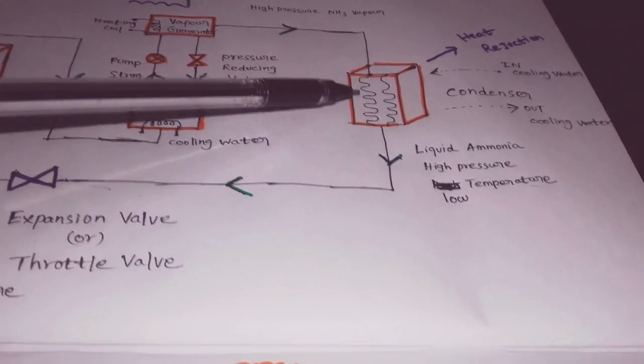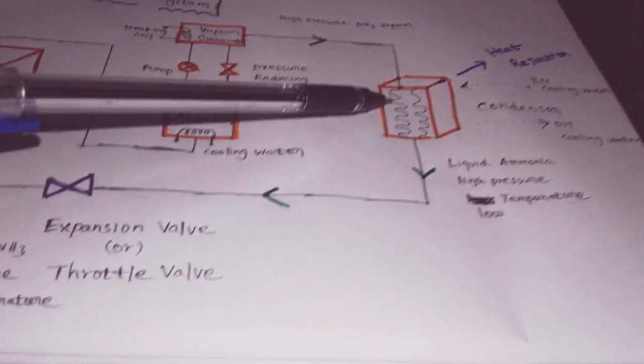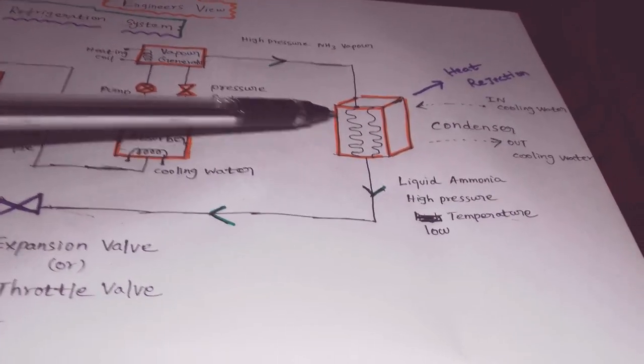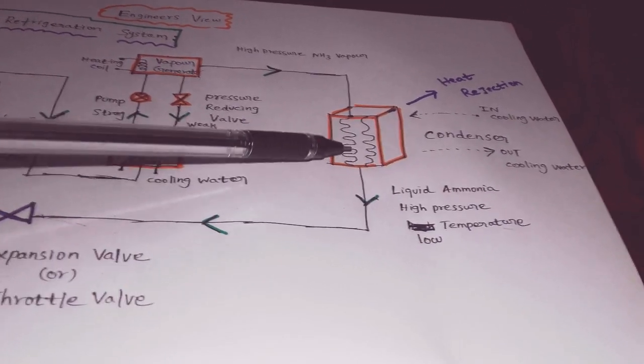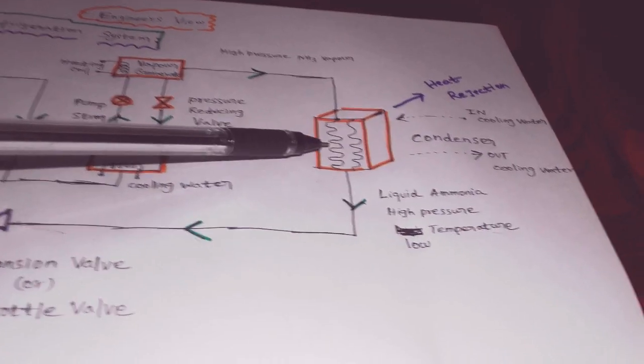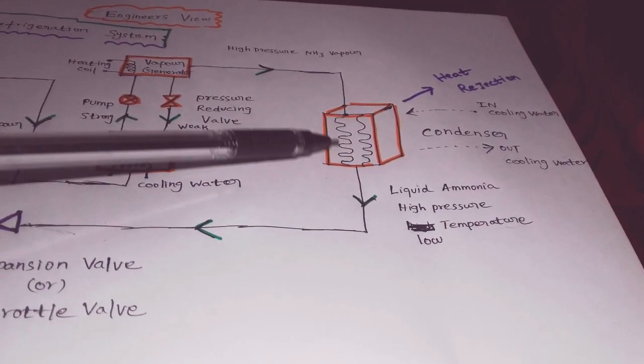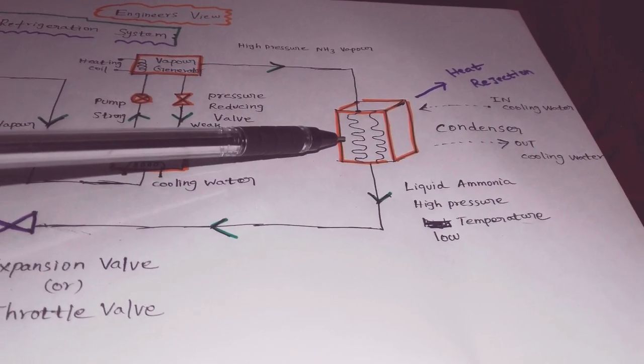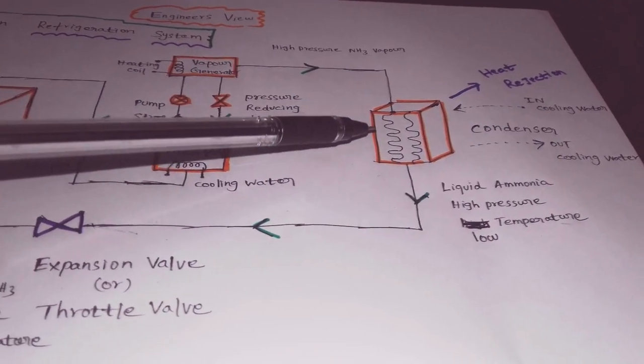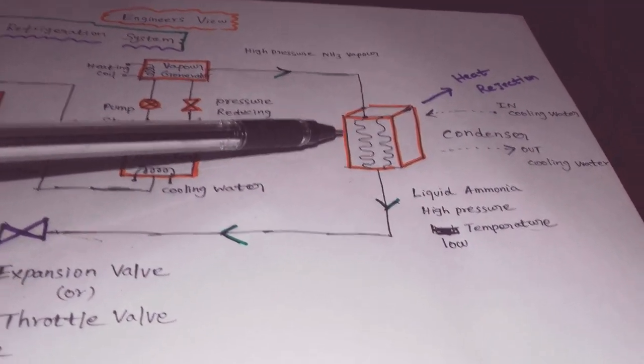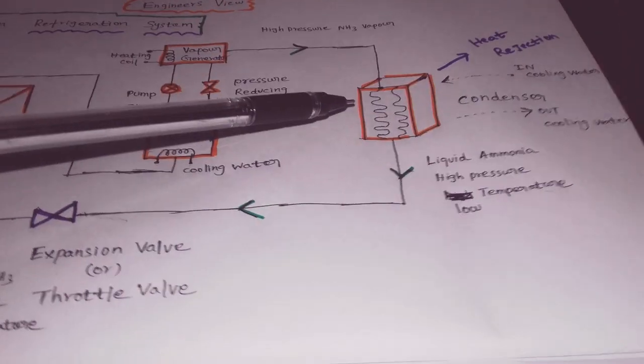The high pressure, high temperature ammonia vapor then goes to the condenser. In the condenser, heat rejection takes place. There are two types of heat rejection: air-cooled and water-cooled.